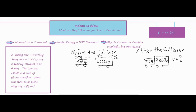Now that we have our picture all set up, we have both of our objects before the collision with their masses labeled on them and their velocities with some arrows, so that we can see that one of the objects is going in the opposite direction, therefore placing a negative in front of it. Now for after the collision, we don't have a whole lot of information. We know that the two cars are sliding together, so they become connected.